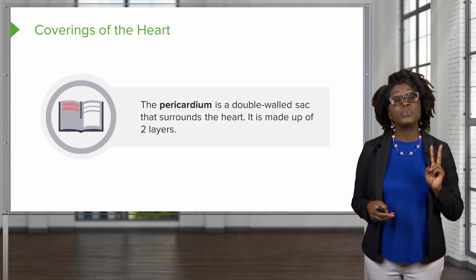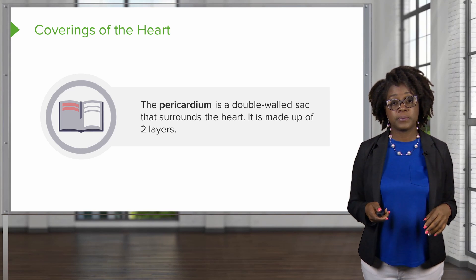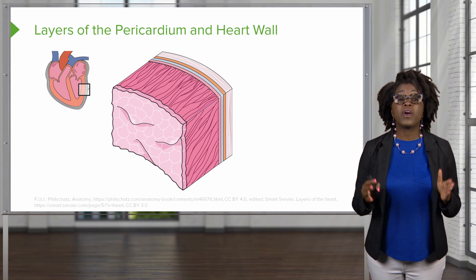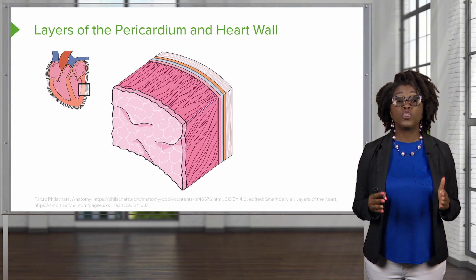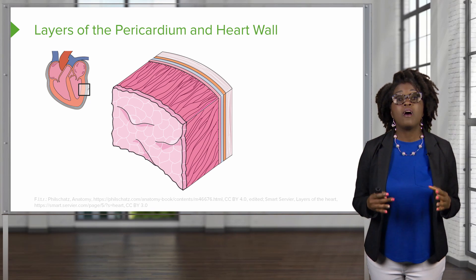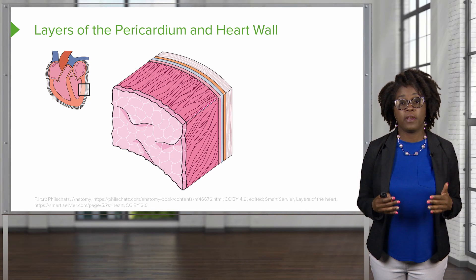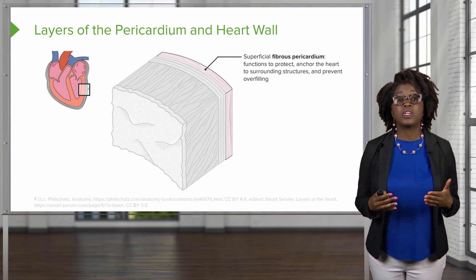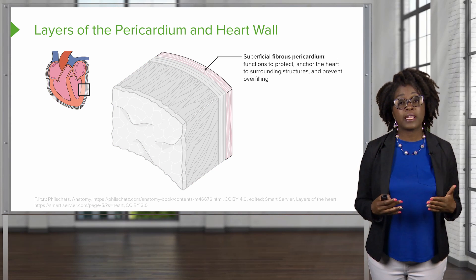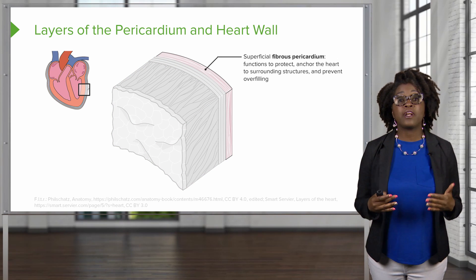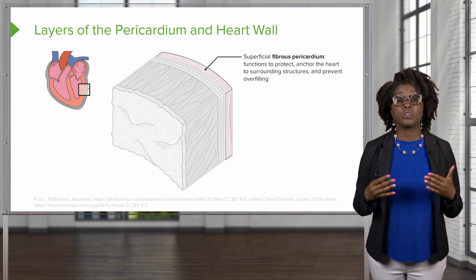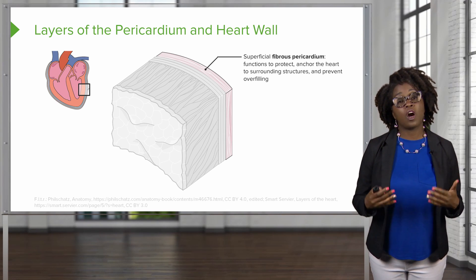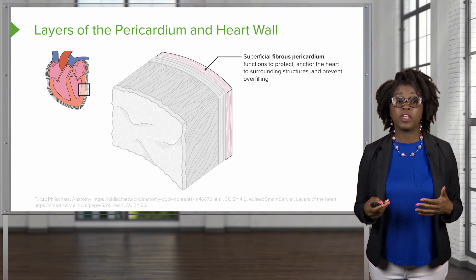It's made up of two layers. First, you have the superficial fibrous pericardium. This layer functions to protect and anchor the heart to the surrounding structures. It also prevents the heart from overfilling.